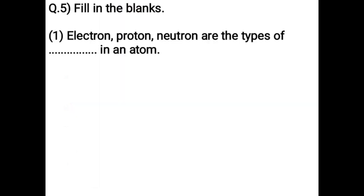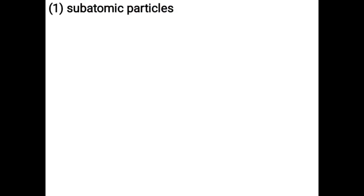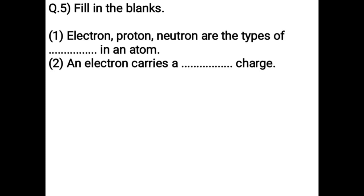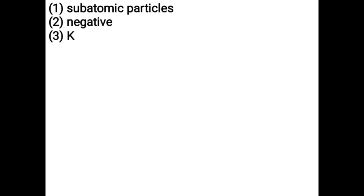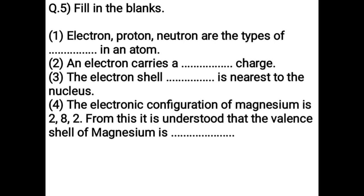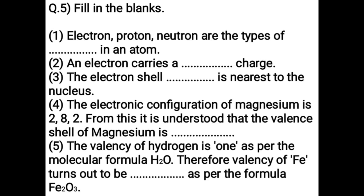Fill in the blanks. Electron, proton, neutron are the types of __ in an atom — answer: subatomic particles. An electron carries a __ charge — answer: negative. The electron shell __ is nearest to the nucleus — answer: K. The electronic configuration of magnesium is 2, 8, 2. From this it is understood that the valence shell of magnesium is __ — answer: M. The valence of hydrogen is 1 as per H₂O; therefore, the valence of Fe in Fe₂O₃ is __ — answer: 3.